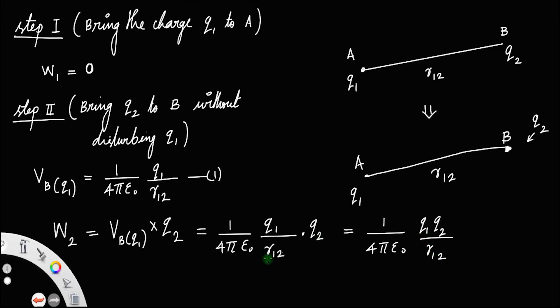So, this is equal to 1 by 4 pi epsilon 0 q1 q2 divided by r12. That is the work done in the second step.